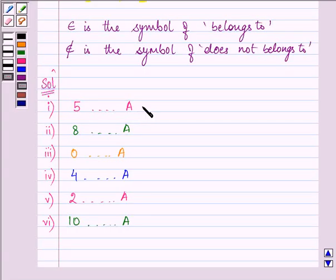In the given set A, the elements are 1, 2, 3, 4, 5, and 6. Now does 5 belong to set A? That means is 5 an element of A? The answer is yes. So we will write the symbol, that is, it belongs to.